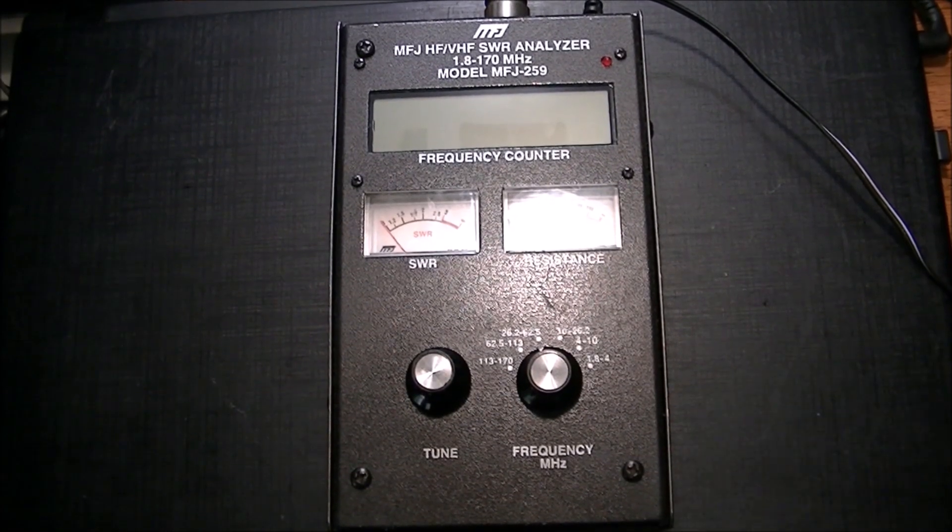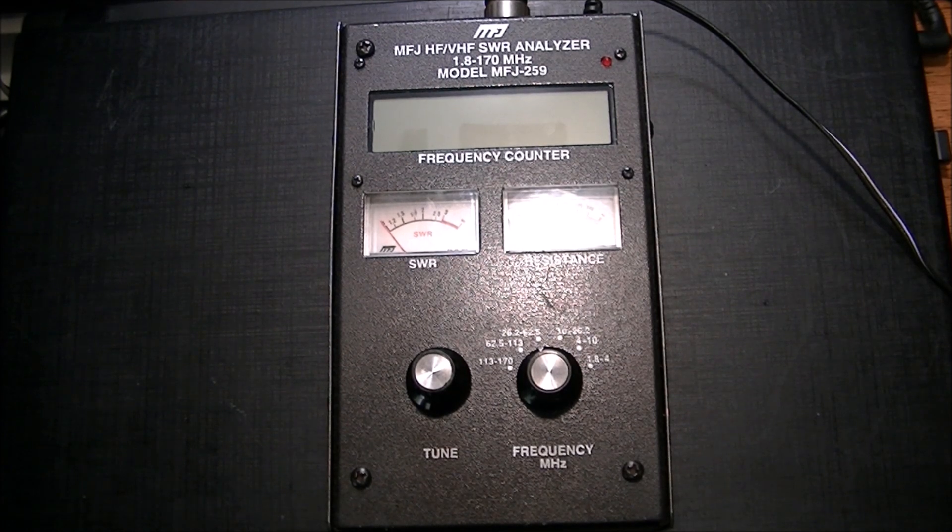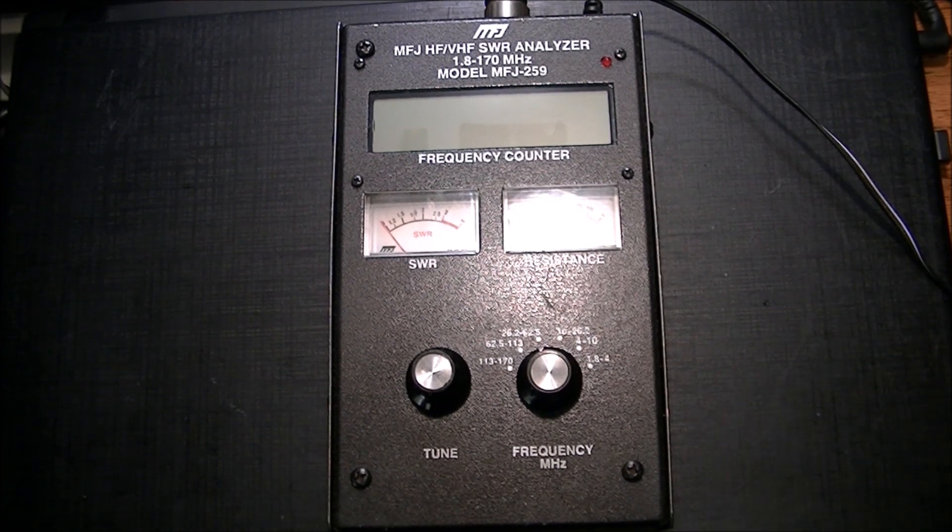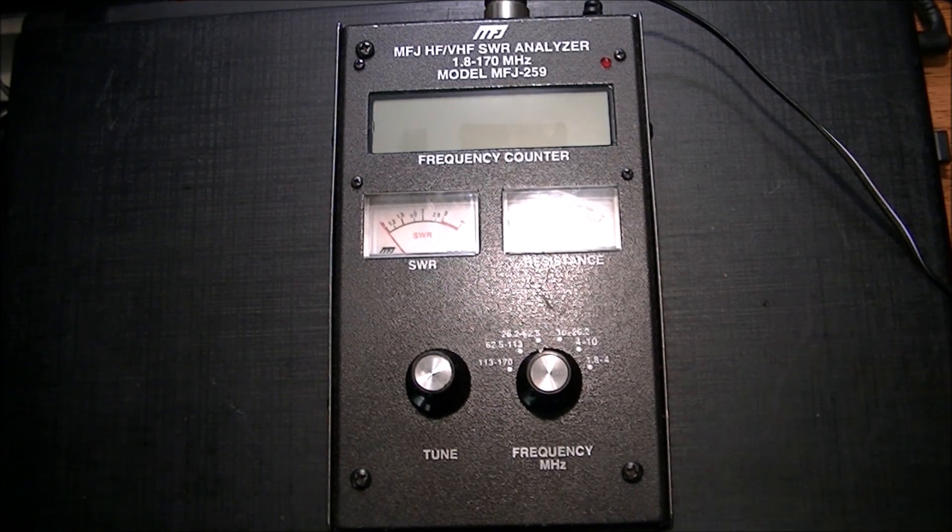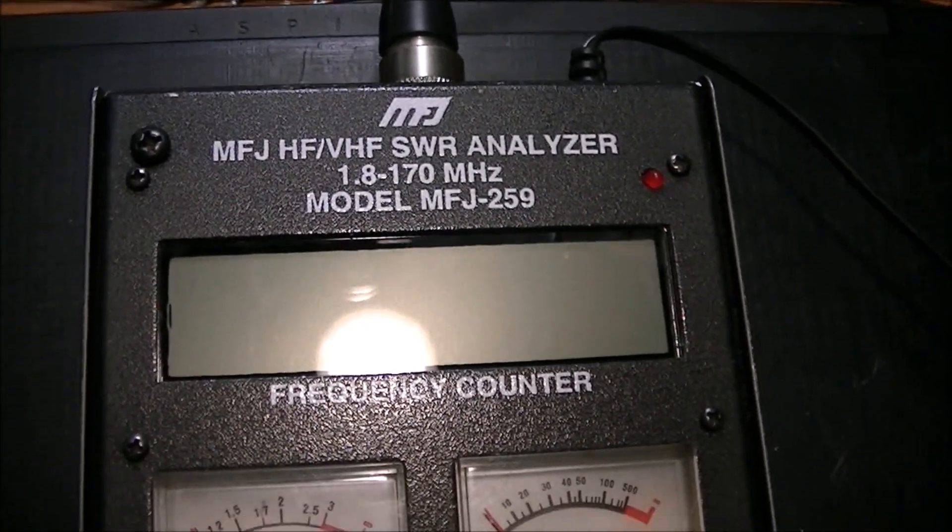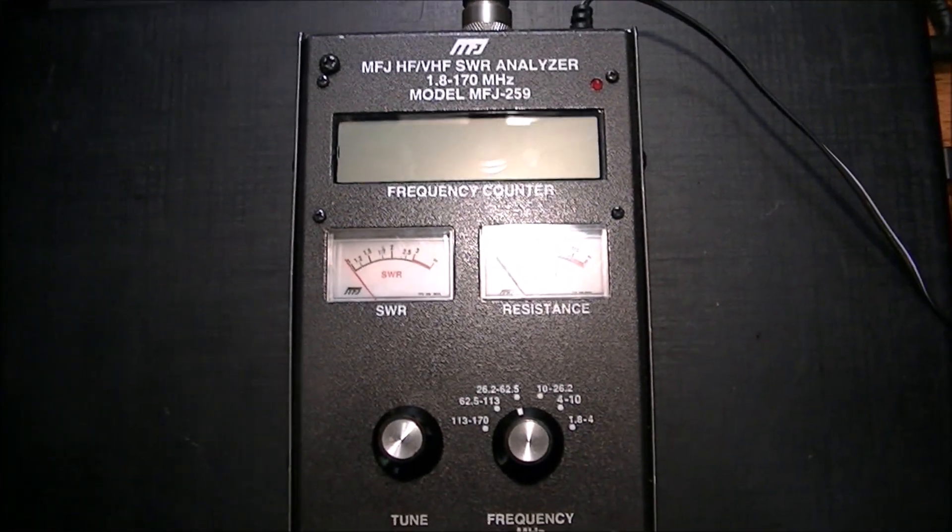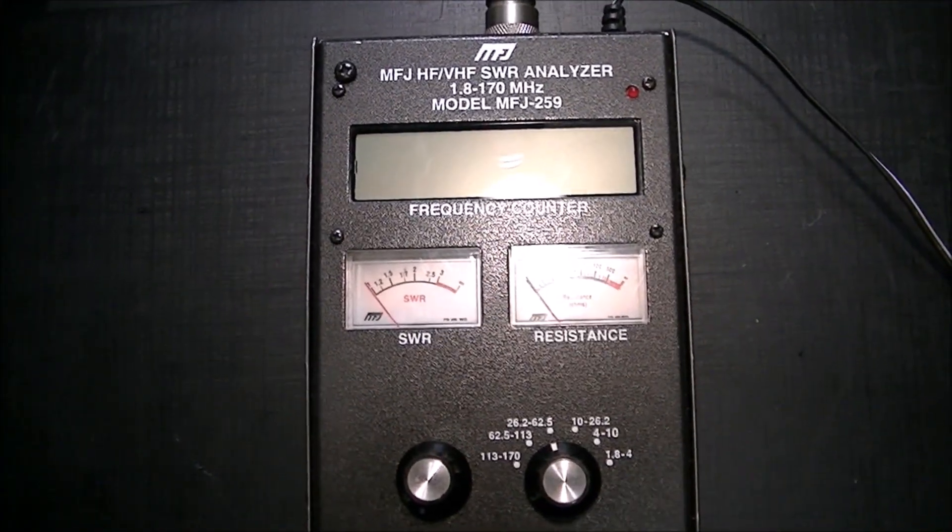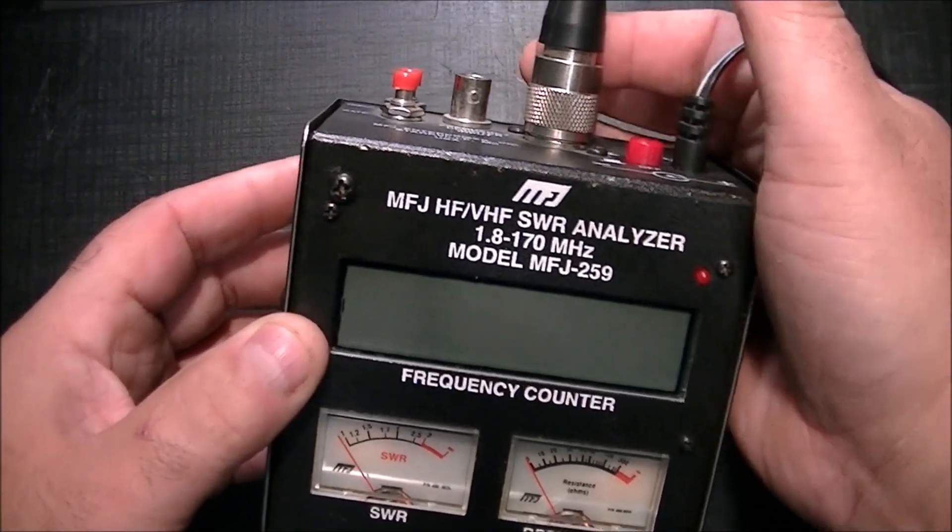Hey everyone and welcome back. Just going to do a brief demonstration of this MFJ-259 SWR meter analyzer, basically an antenna analyzer which covers the bands 1.8 right up to 170 megahertz.